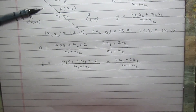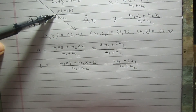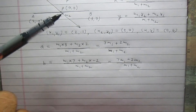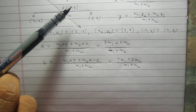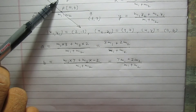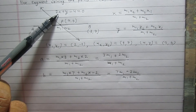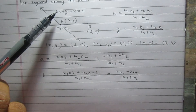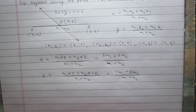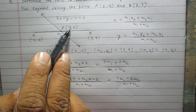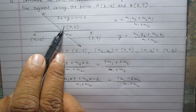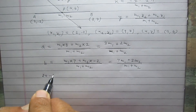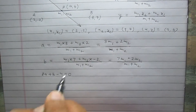Now, P is the point of intersection of the straight line and the line segment AB. Since the coordinates of point P, which are (A, B), are a solution of the equation 2x plus y minus 4 equals 0, we can substitute X as A and Y as B to get 2A plus B minus 4 equals 0.